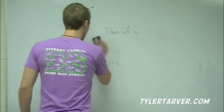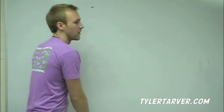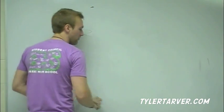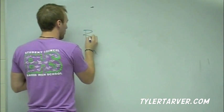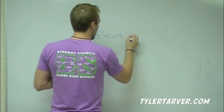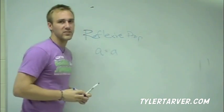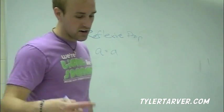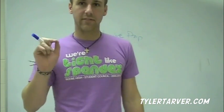Next we've got the Reflexive Property. Say you're looking in a mirror or at a clear lake — you see your reflection, the exact same thing reflected back at you. The Reflexive Property means that a equals a: something is equal to itself. That's it — stuff is equal to itself.